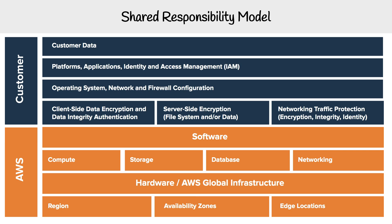And then for AWS, we have software and hardware. On the software side, you have compute, storage, database, and networking. For the hardware and global infrastructure, you have the regions, the AZs, and the edge locations.